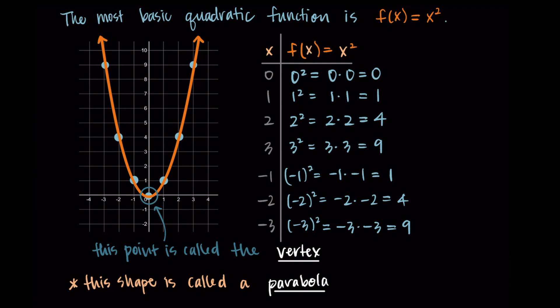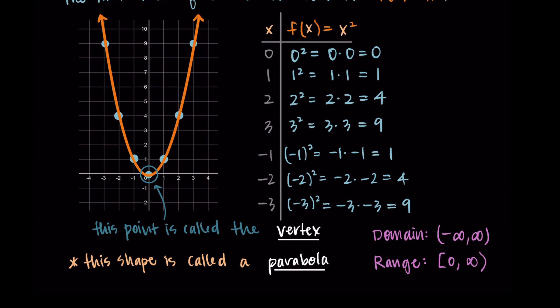All quadratic functions will basically look like this — they'll have a vertex and this parabola shape. Before moving to the general version, let's note the domain and range. The domain is all real numbers, negative infinity to positive infinity — we can give x squared any input and it provides an output. The range starts at 0 with a closed bracket, continuing to infinity, since all output values are positive: [0, ∞).